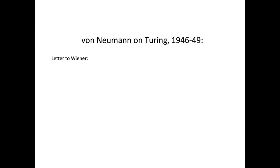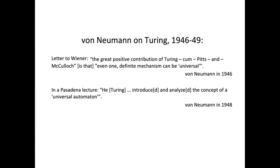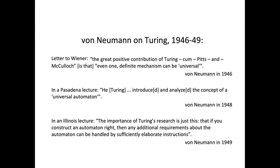These are examples of von Neumann's remarks on Turing and the universal machine from this period. In 1946, he wrote to Norbert Wiener saying: 'The great positive contribution of Turing, Church, and McCulloch is that even one definite mechanism can be universal.' In a lecture in Pasadena in 1948, von Neumann said he introduced and analyzed the concept of a universal automaton. In a lecture in Illinois in 1949: 'The importance of Turing's research is just this — that if you construct an automaton right, any additional requirements about the automaton can be handled by sufficiently elaborate instructions.' But was von Neumann familiar with uncomputable numbers before 1946? This question has been much debated. We now know the answer is almost certainly yes.